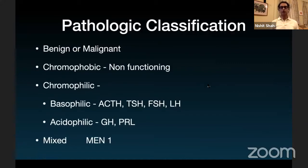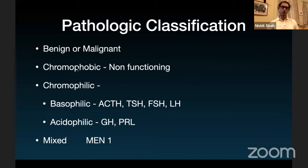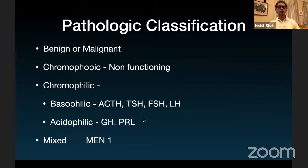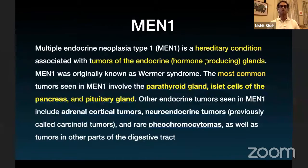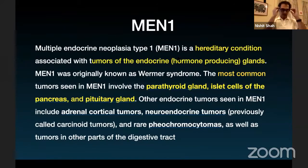Tumors of the pituitary gland can be benign or malignant — 99% are benign, malignant is very rare. They can also be classified as chromophobic or chromophilic. Chromophobic cells give rise to non-functioning adenomas, whereas chromophilic cells are divided into basophilic and acidophilic. Acidophilic cells will give you Cushing's or thyroid adenomas, while the other will give you acromegaly or prolactinomas. You may also have mixed tumors. Not very common are MEN tumors — multiple endocrine neoplasia — with Type 1 more common in the pituitary, thyroid, and pancreas.